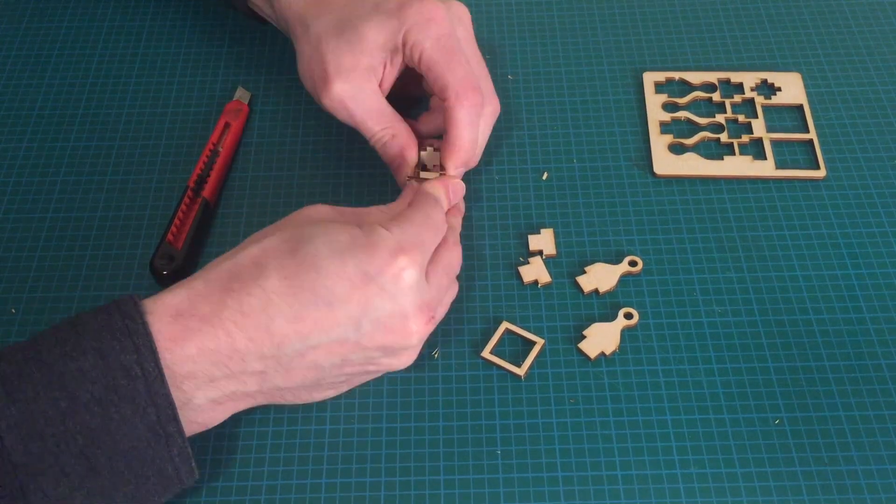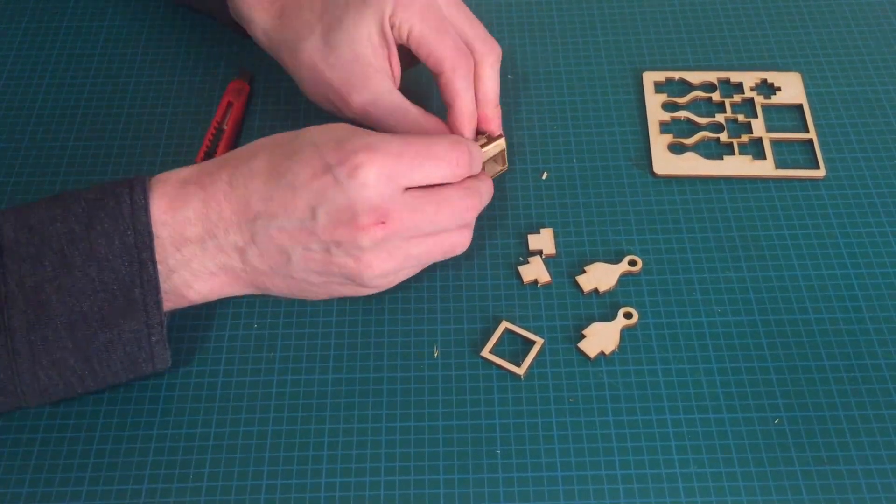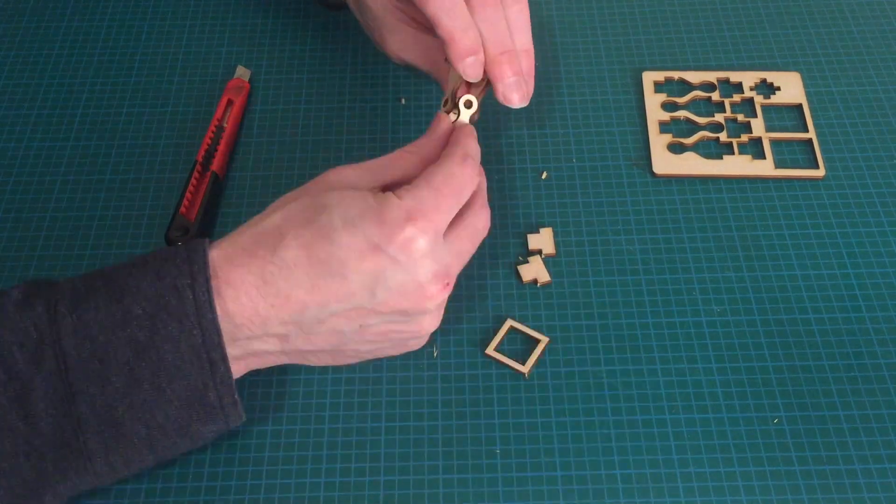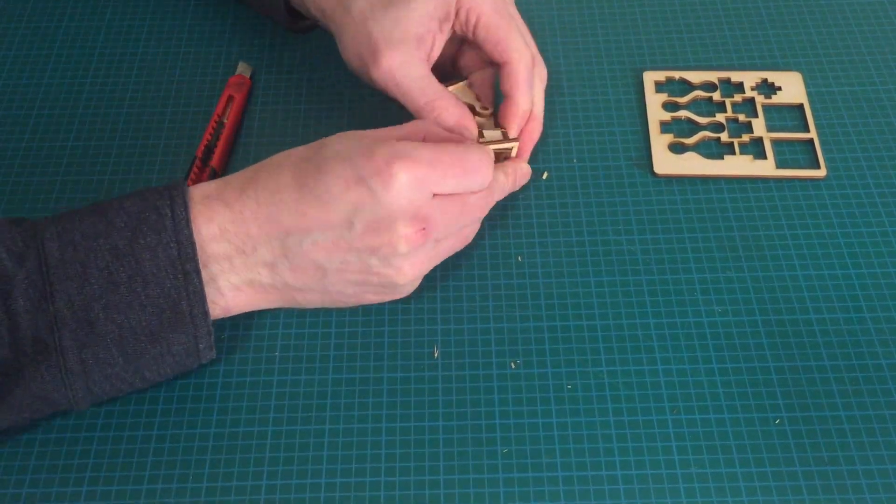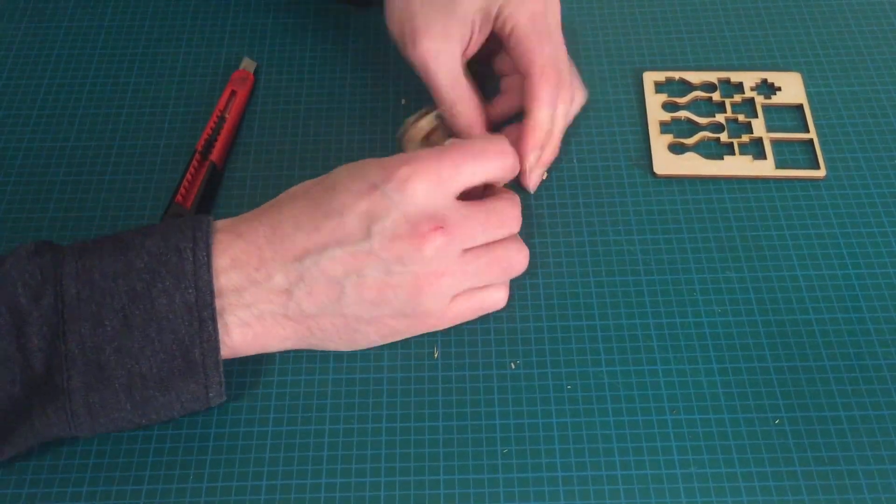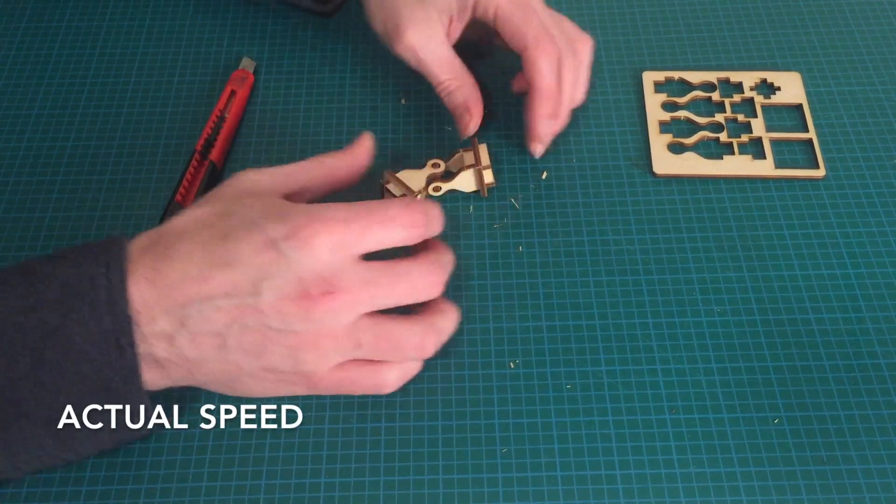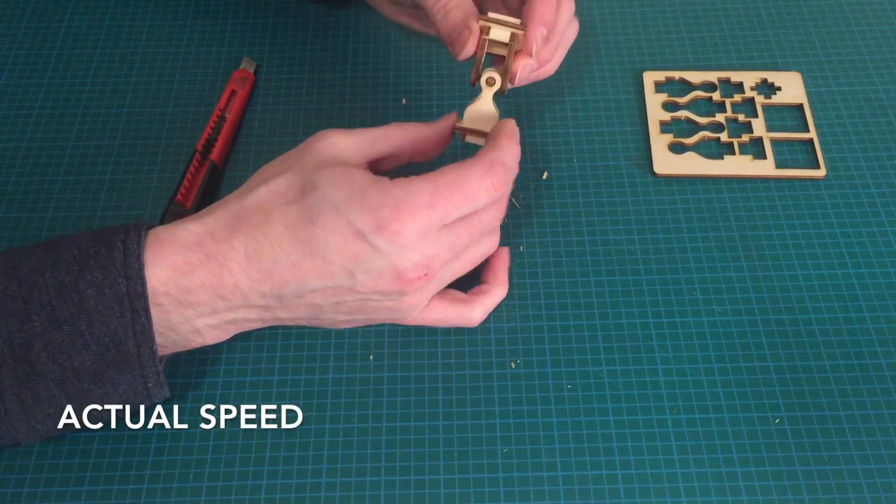When you look at the Fusion file you will see that some of the parts in the cut layout are upside down, so when you change the material thickness they don't all line up. This does not affect the output as it is a 2D design, but in future I will make sure that the orientation of the parts is the right way round.